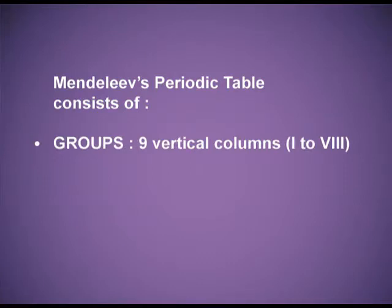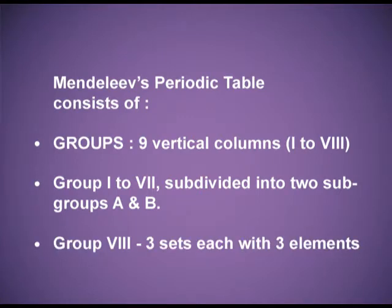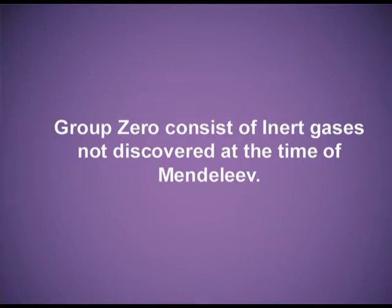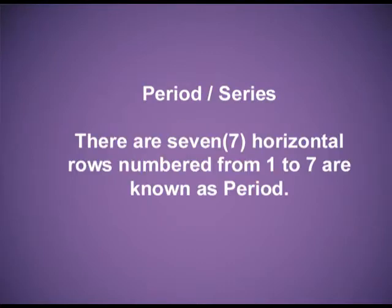Mendeleev's Periodic Table consists of groups — there were nine vertical columns from one to eight. Groups one to seven were subdivided into two subgroups A and B. Group eight was divided into three sets, each with three elements. Group zero, which consisted of inert gases, was not discovered at the time of Mendeleev. Periods, or series, were seven horizontal rows numbered from one to seven, known as periods.